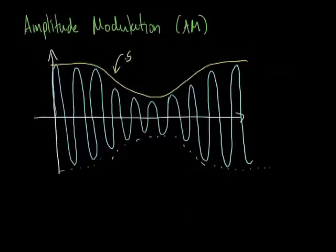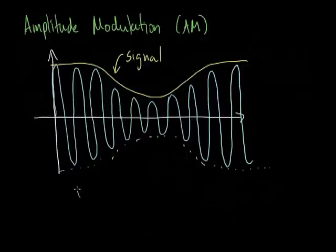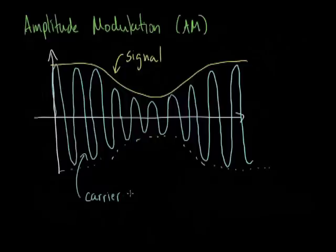We have two distinct pieces: the signal, and the carrier wave that carries the signal. To decode this, you look at how big the wave is at any given point, and you can recover the signal. This scheme, amplitude modulation, is used in AM radio to transmit the songs you hear in your car.